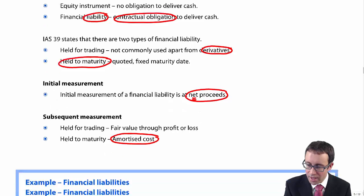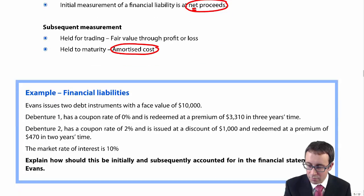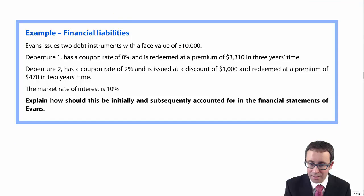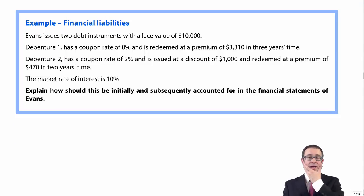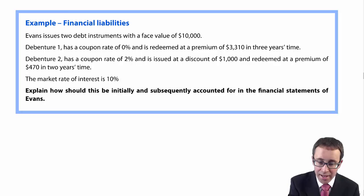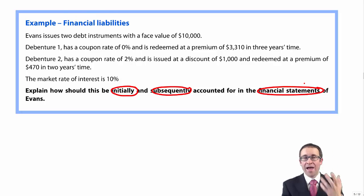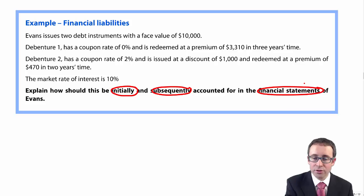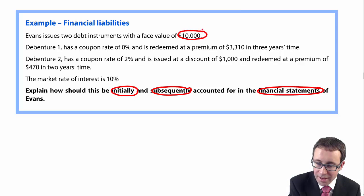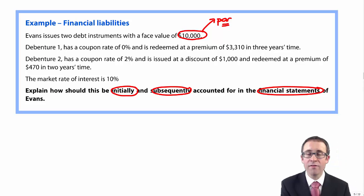We can now adopt the same technique for financial liabilities. We've got an example, two of them. Explain how these financial liabilities should be initially and subsequently accounted for in the financial statement of Evans - statement of financial position, statement of profit or loss. We've issued two debt instruments with a face value of $10,000. That's your par value - face value, par value.